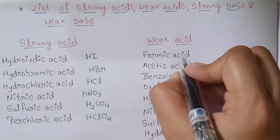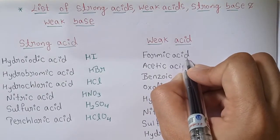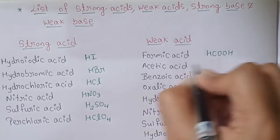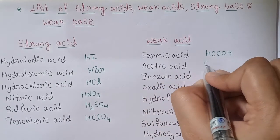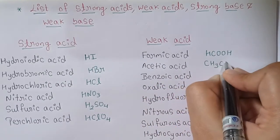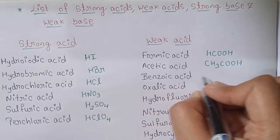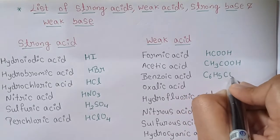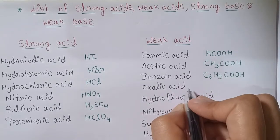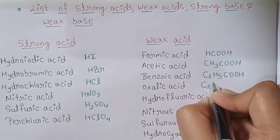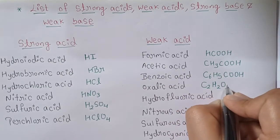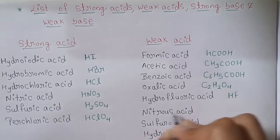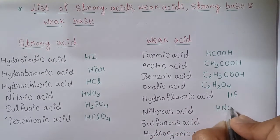Weak acids: first is formic acid (HCOOH), then acetic acid (CH3COOH), benzoic acid (C6H5COOH), oxalic acid (C2H2O4), hydrofluoric acid (HF), and nitrous acid (HNO2).